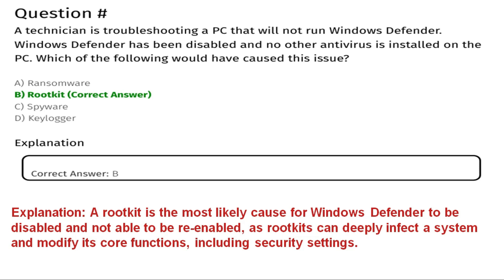A rootkit is the most likely cause for Windows Defender to be disabled and unable to be re-enabled, as rootkits can deeply infect a system and modify its core functions, including security settings. That's why the correct answer is B, rootkit.